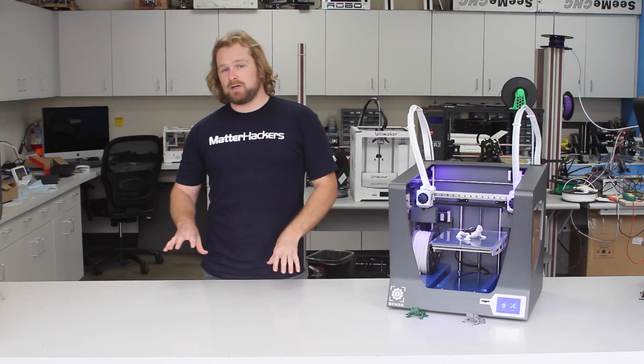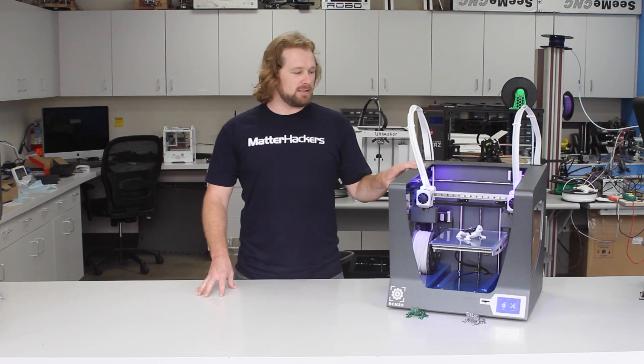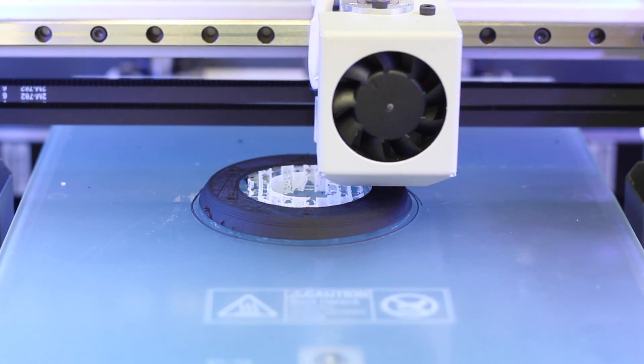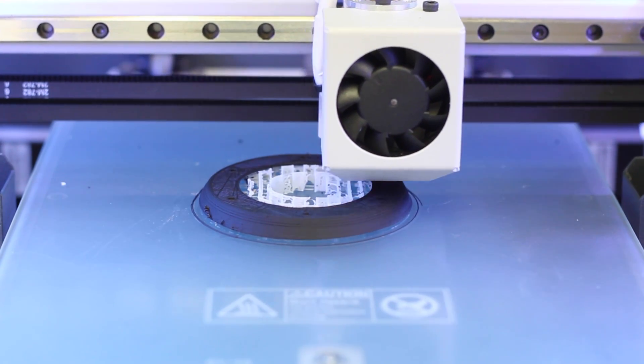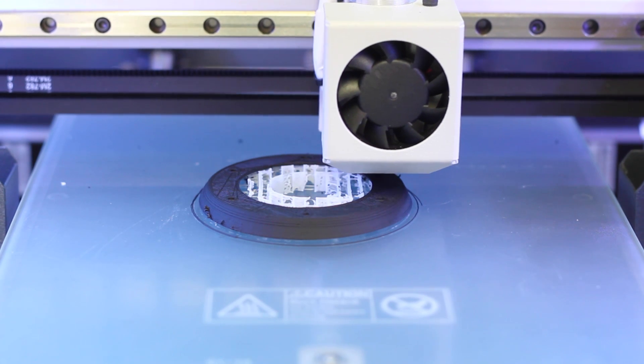The next step of where 3D printing is really going, and why the independent dual extrusion system is really nice, is you can do printable supports. So then you're going to have a HIPS with an ABS or a PVA with a PLA.